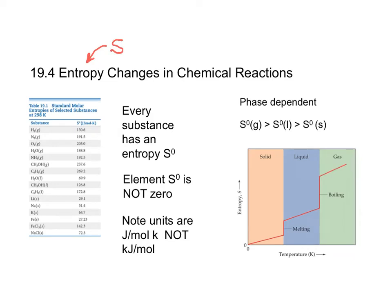The first point here says every substance has an entropy that is labeled S⁰. If you look at table 19.1, you will see many substances, and each of them has a value. The element S⁰ will never be a zero number.